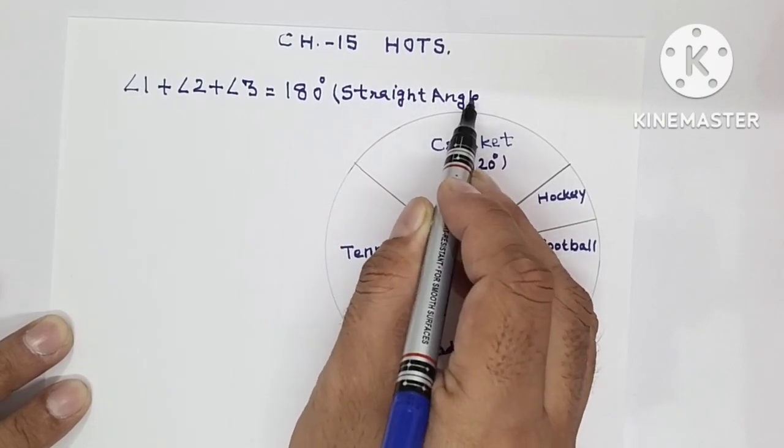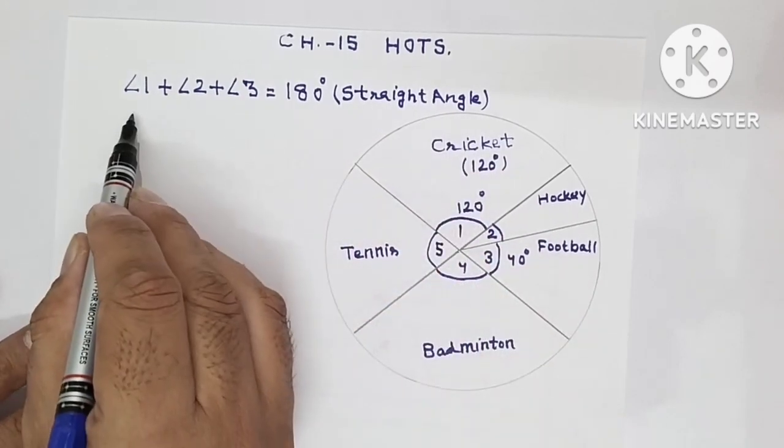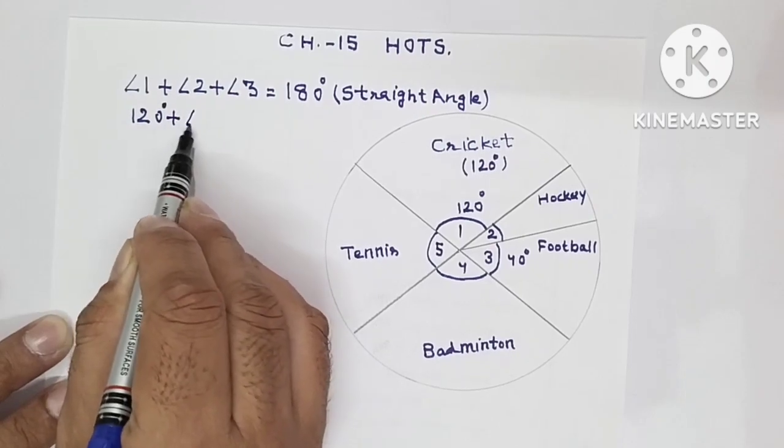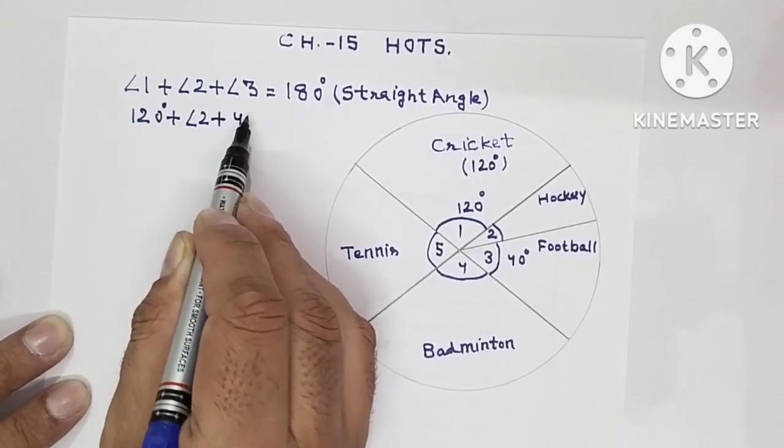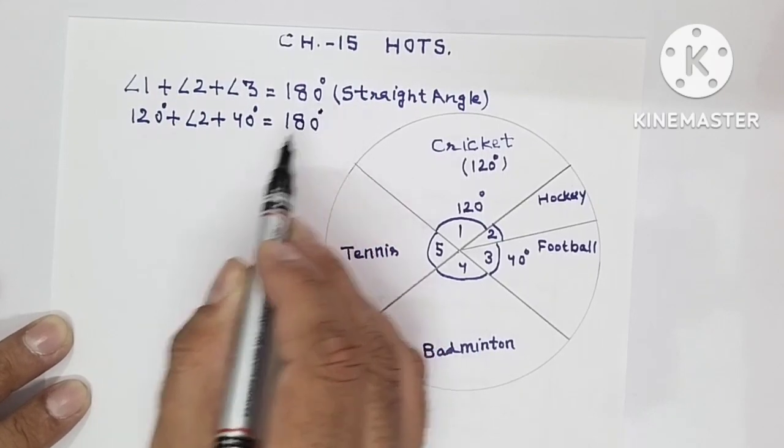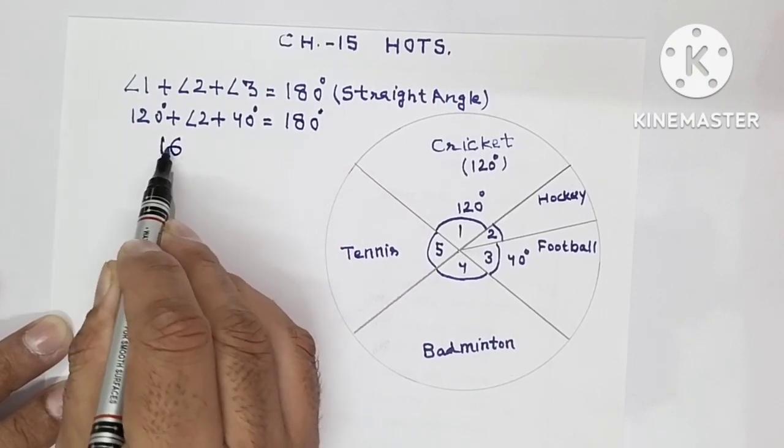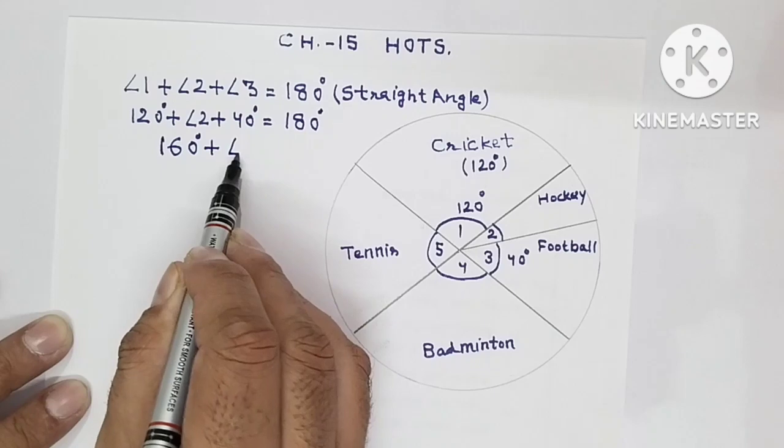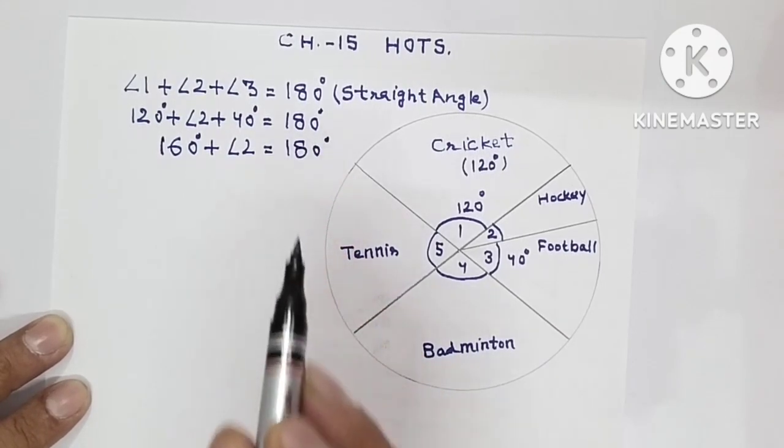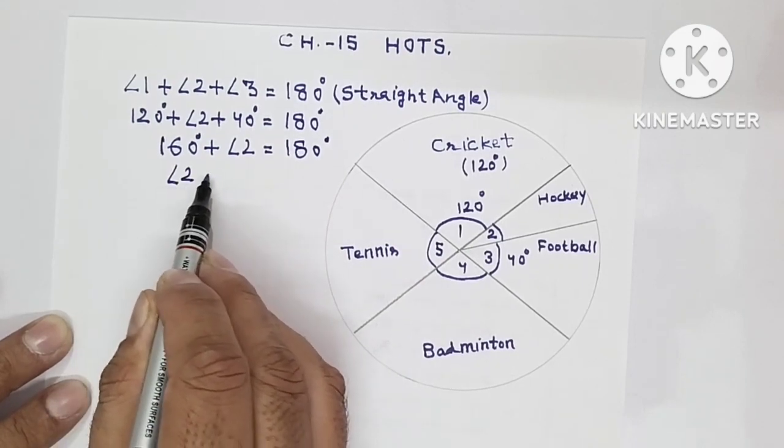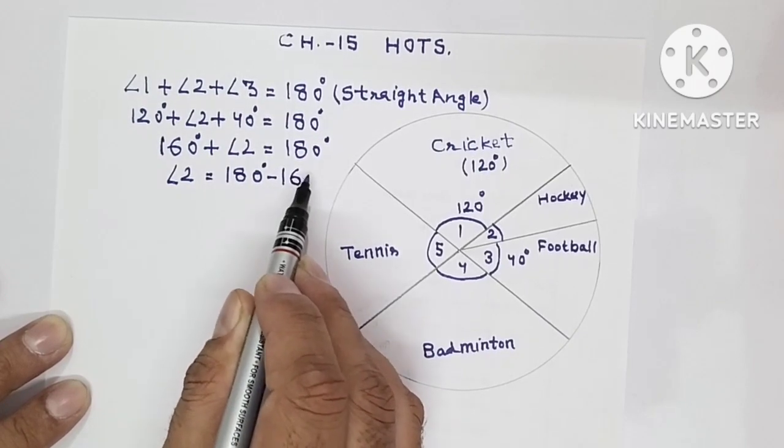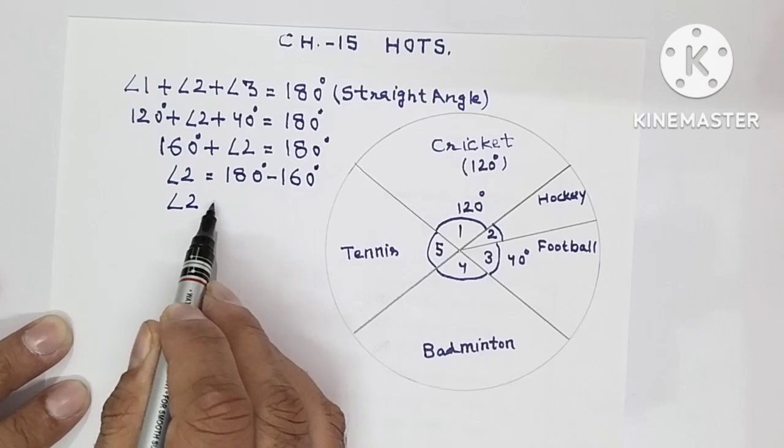Now, whatsoever angle is given its value you fill. Angle one is of how many degrees? 120. Two you are not given, so keep it as angle two. Three angle is given 40 degrees. And it is equal to 180 degrees. So, 120 plus 40 is 160 degrees plus angle two which is equal to 180 degrees. So angle two is 180 degree minus 160 degree, so angle two is equal to 20 degrees.